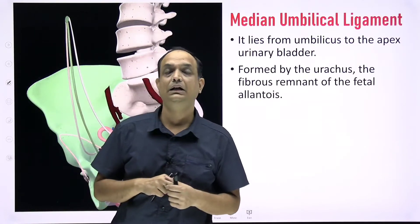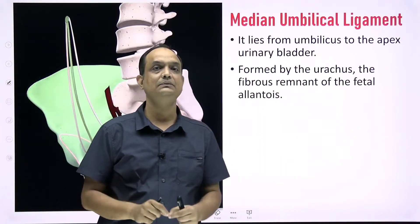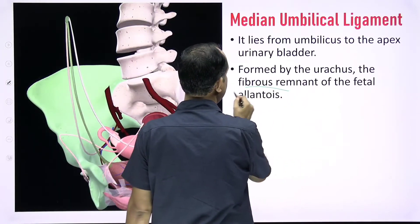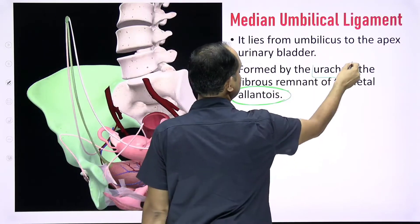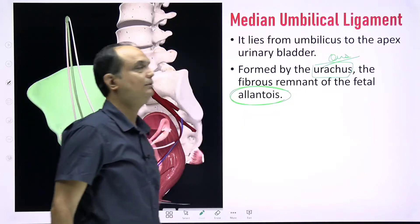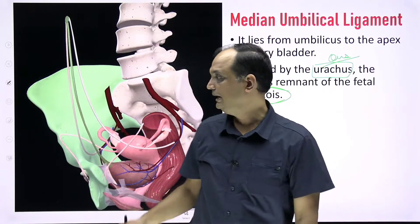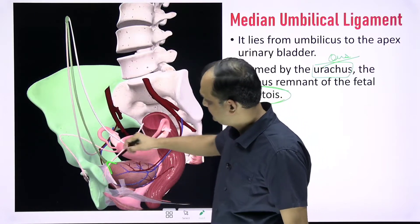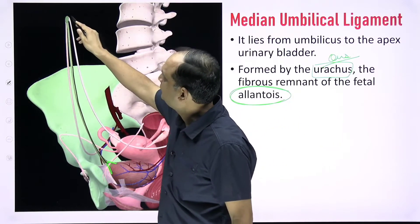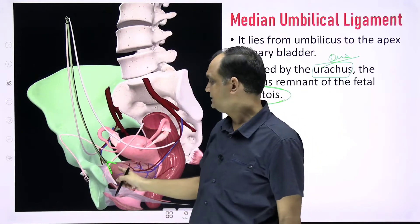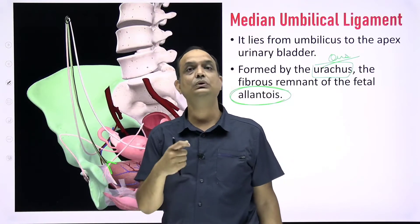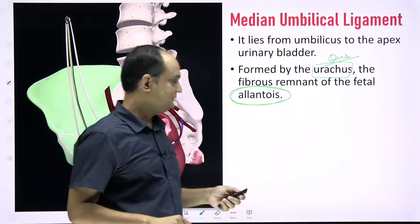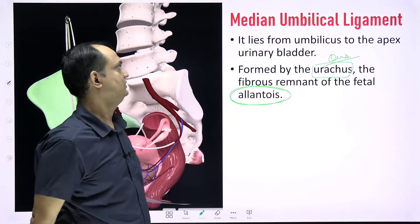The median umbilical ligament is embryological in origin and develops from the remnant of the fetal allantois in the form of the urachus. In the image, you can see the apex of the urinary bladder, and from this apex there is a connection going up to the umbilical area — this connection is known as the urachus, which develops from the obliterated fetal allantois. The median umbilical ligament is a thick cord-like structure.